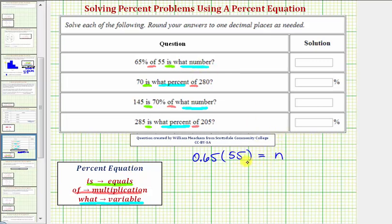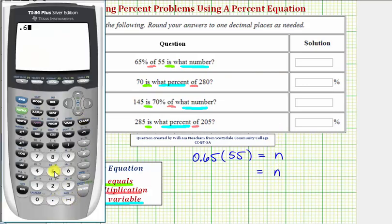Notice how here, n is equal to this product. So going to the calculator, we have 0.65 times 55, which is equal to 35.75.